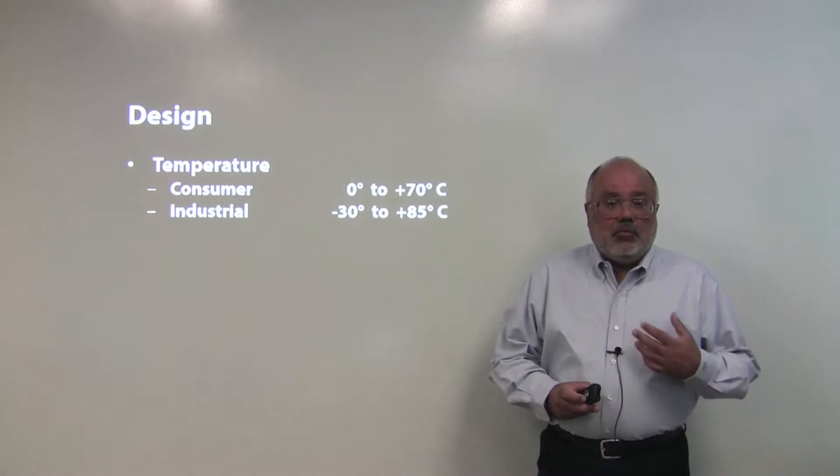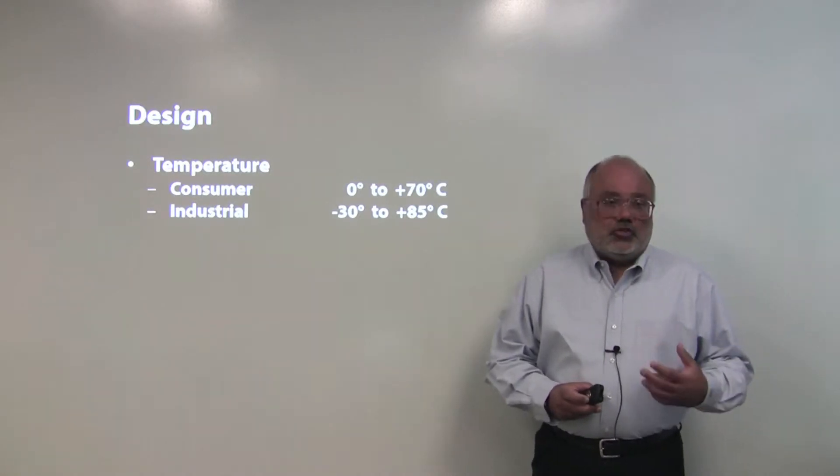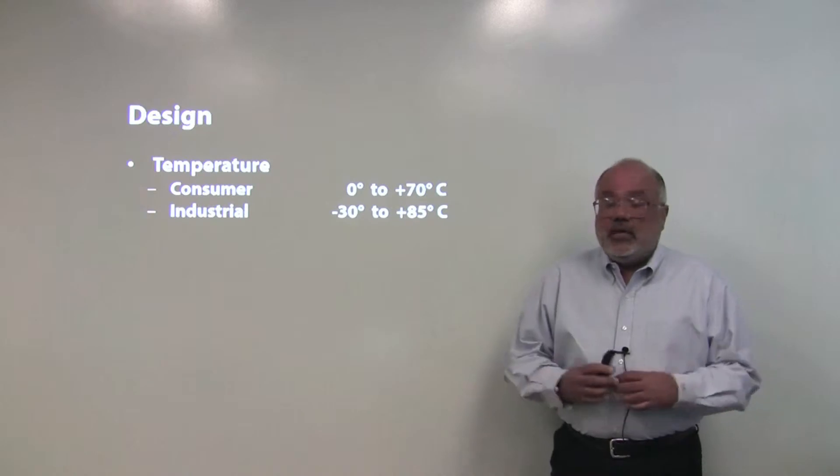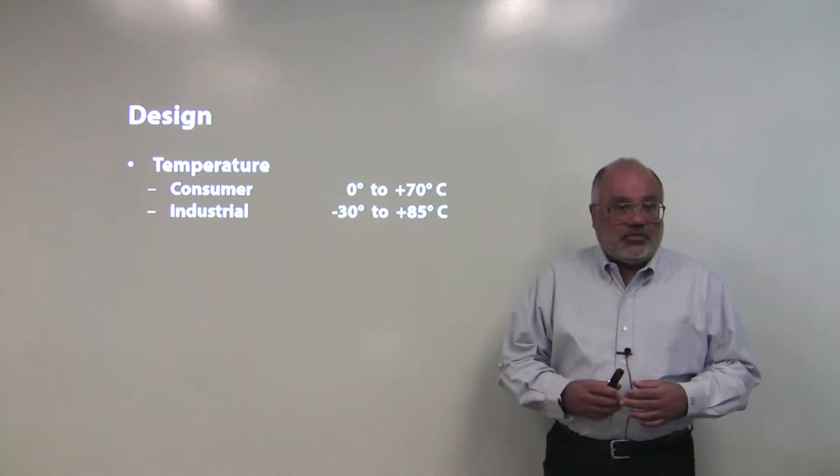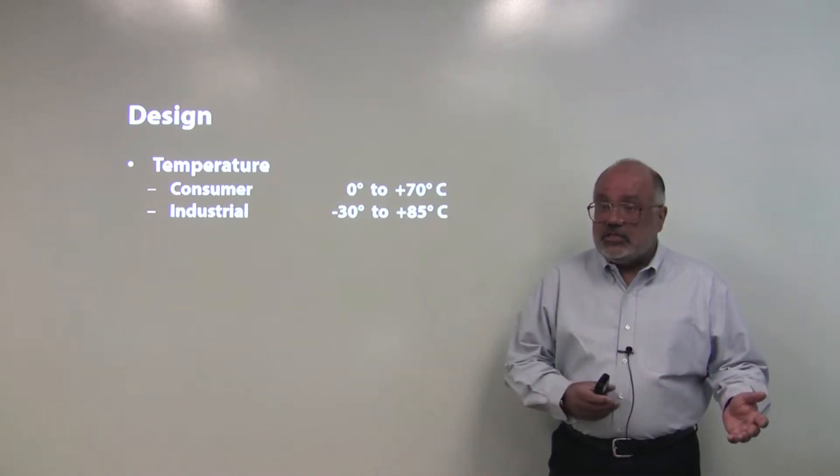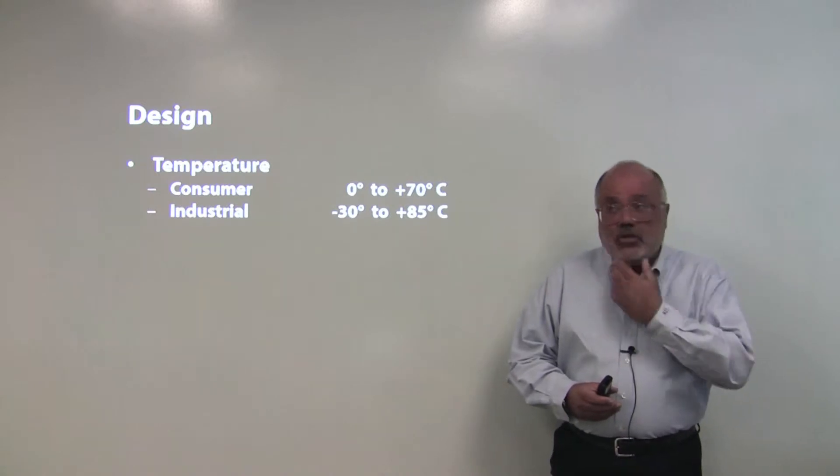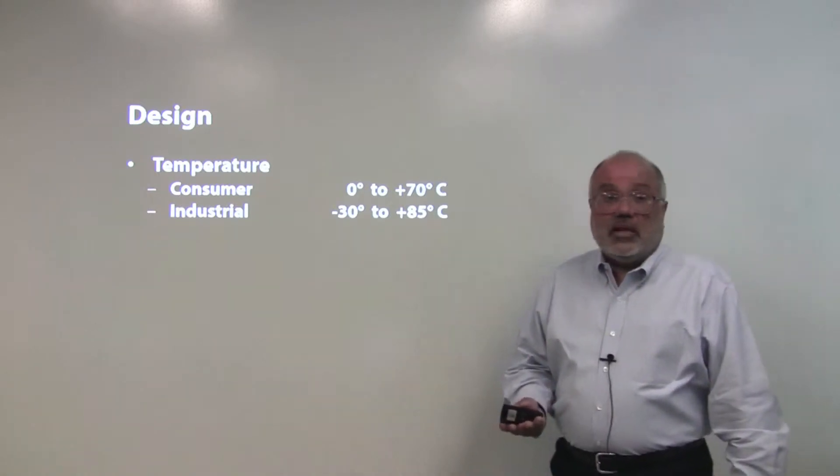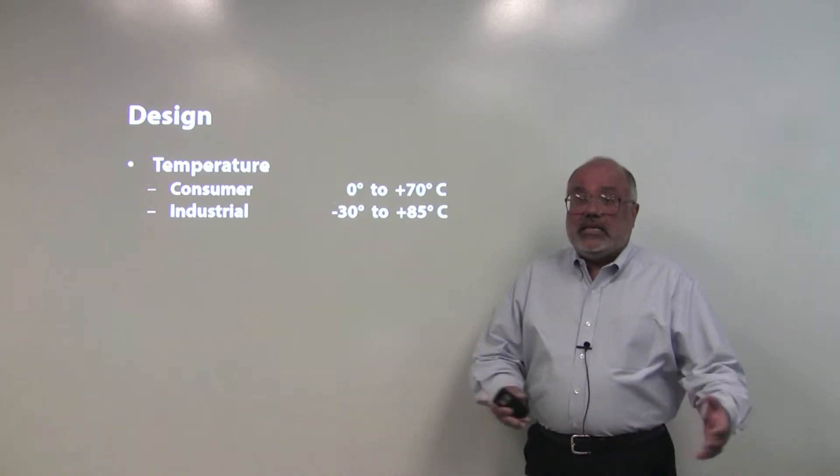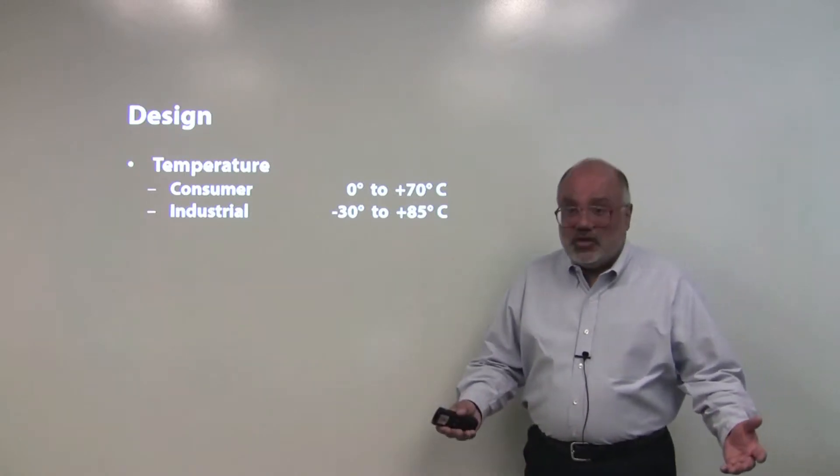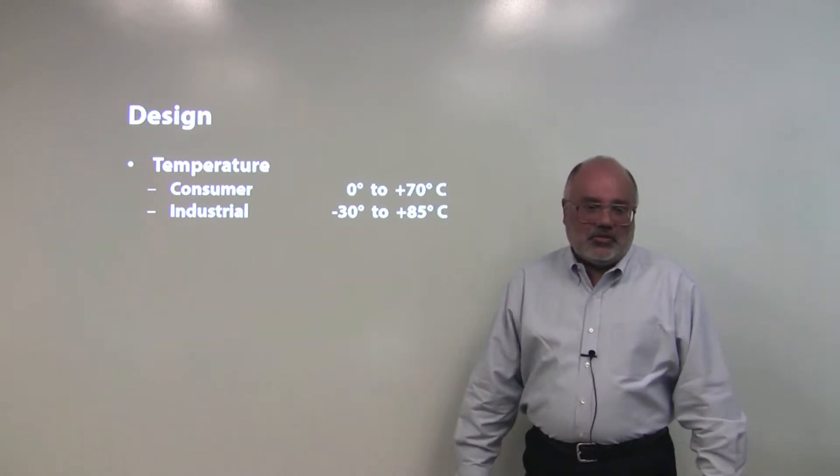In the process of designing, one of the most important things you will do for the technology is select the temperature range of your product. If it's an indoor product, you might pick a consumer range for the radio from zero to 70 degrees C typically. If it's an industrial product, you might go from negative 30 to plus 85. Your product might need to be outside and exposed to environmentals that are different from a typical consumer environment.